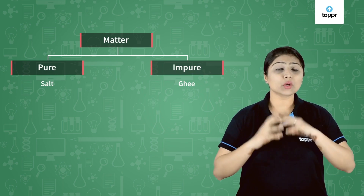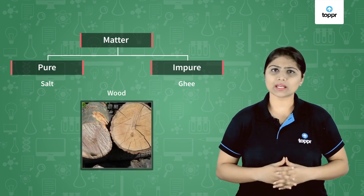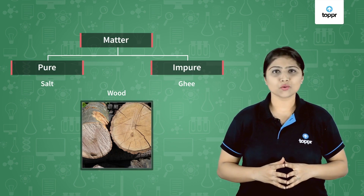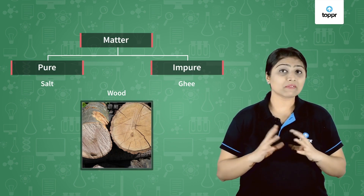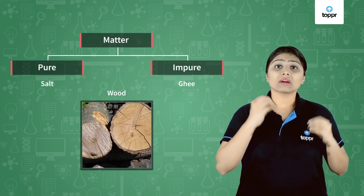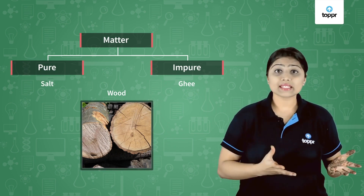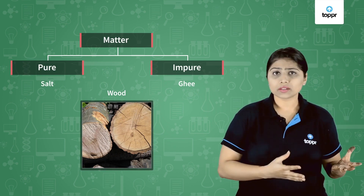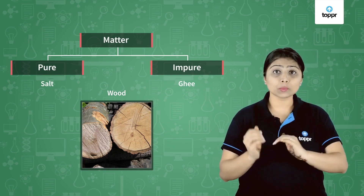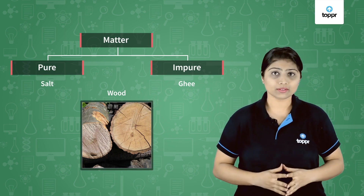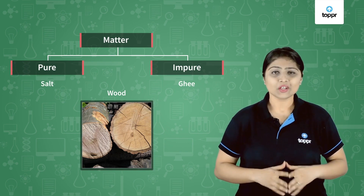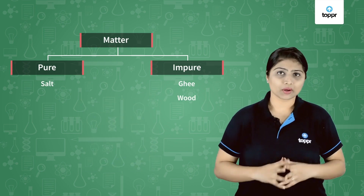Let's take the example of wood. What is wood made up of? Is it just made up of wood particles? No. Wood is made up of different kinds of particles — it is made up of cellulose, hemicellulose, water, lignin, and there are many elements too present in wood. That means wood is made up of different kinds of particles, so wood is impure.